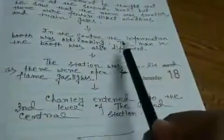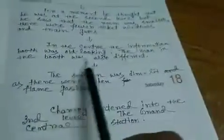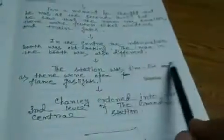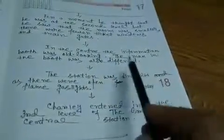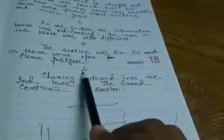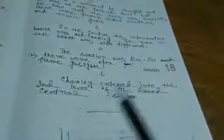There were fewer ticket windows and train gates. In the center, the information booth was old looking. The man in the booth was also different. That man was very different looking. The station was dim light, as there were open flame gas lights. Anything is not normal like us nowadays. So what happened at that time? Charlie entered into the third level of the Grand Central Station. Again, he had entered into the third level.